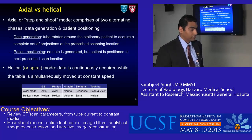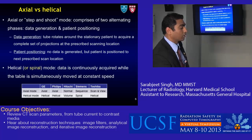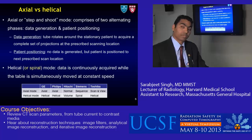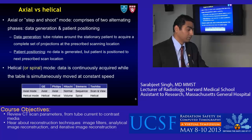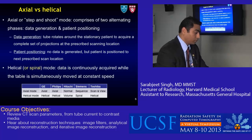Next we move to axial versus helical mode. Axial, or step-and-shoot mode, comprises two alternating phases: data generation and patient positioning. In the data generation phase, the tube rotates around the stationary patient to acquire a complete set of projections at the prescribed scanning location. In patient positioning, no data is generated — the patient is moved to the next prescribed scan location. In helical mode, data is continuously acquired while the table simultaneously moves at a constant speed. Almost all vendors call it helical, except Hitachi which calls it volume mode.